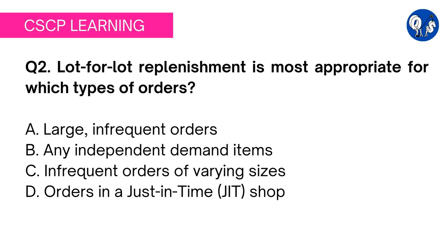Question 2: lot-for-lot replenishment is most appropriate for which types of orders? Option A: large infrequent orders. Option B: any independent demand items. Option C: infrequent orders of varying sizes. Option D: orders in a just-in-time shop. Before evaluating all the options, we should find out the definition of lot-for-lot replenishment.